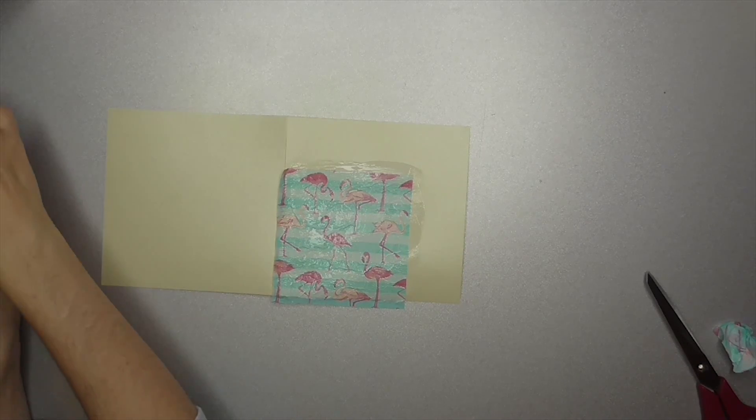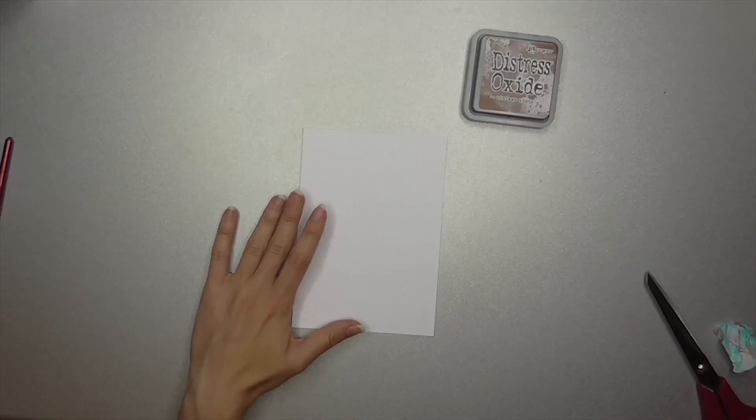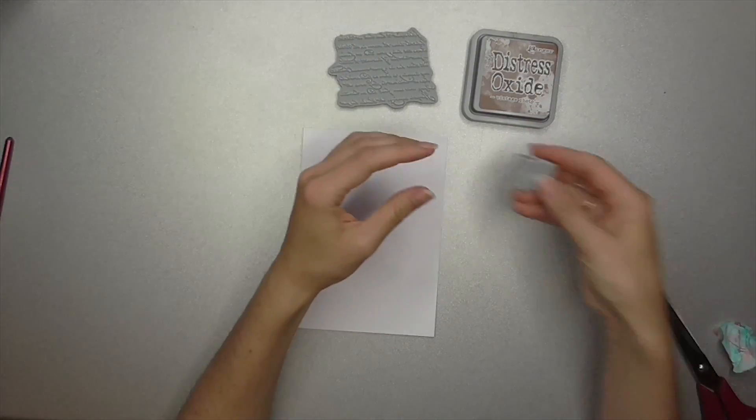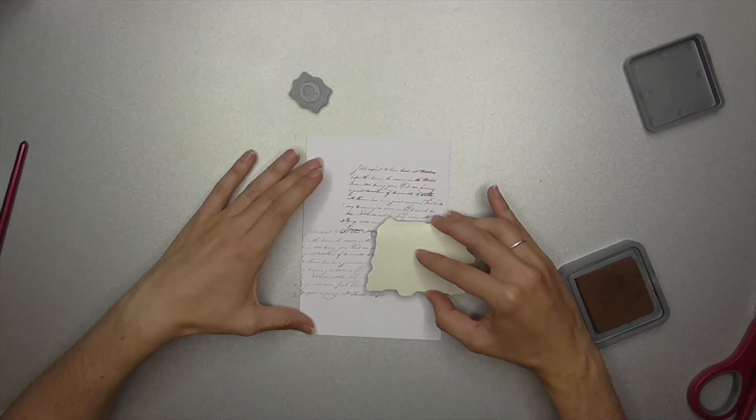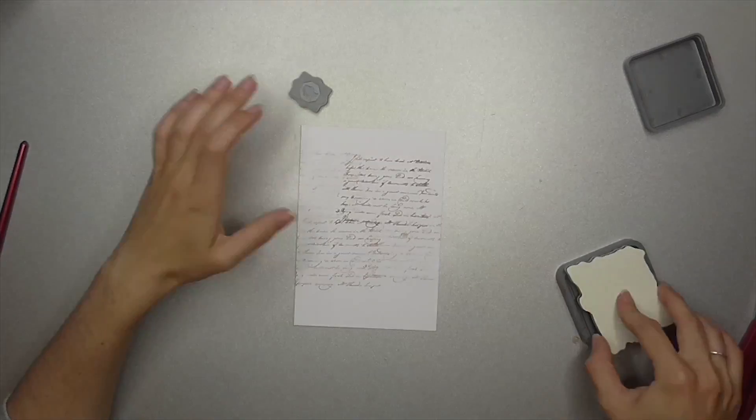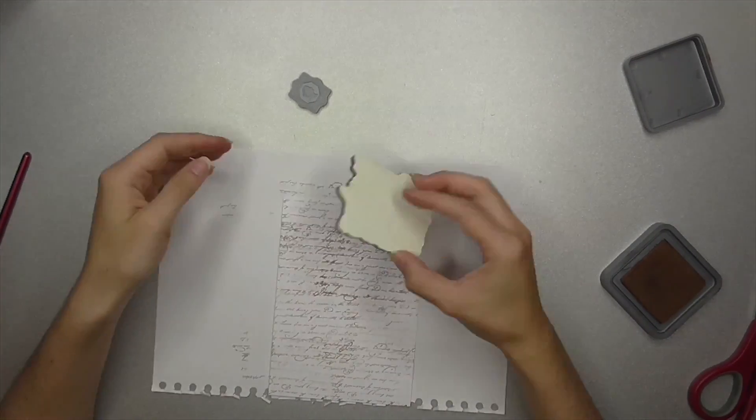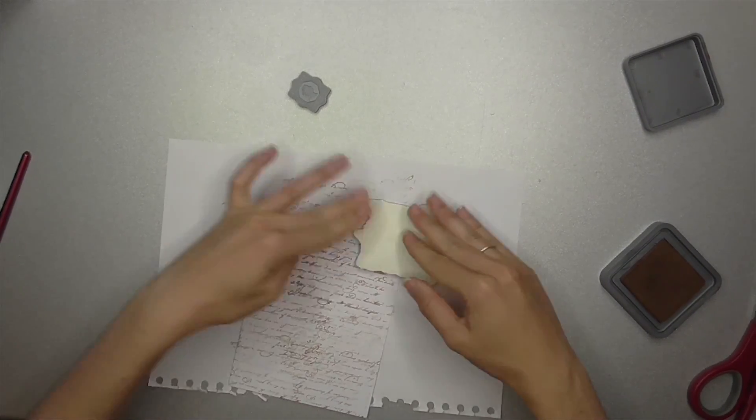It usually takes 30 minutes or something. Depending on what glue do you use. For the next card I will use my Vintage Photo Ink Pad. The writing stamp and the little postage stamp. And what I want to do is cover the whole card with the writing stamp. And what I forgot to tell, you probably need a piece of paper so you don't end up messing up your desk. Okay, so that's the finished look. I'm pretty happy with it.